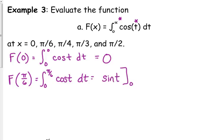We're going to evaluate it from 0 to π over 6. So the sine of π over 6 minus the sine of 0 is 0. Sine of π over 6 is 1 half. The sine of 0 is 0. So that is 1 half.